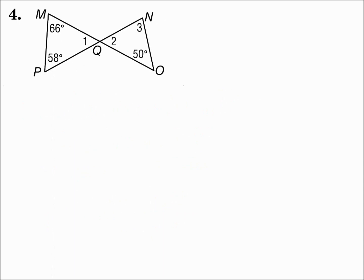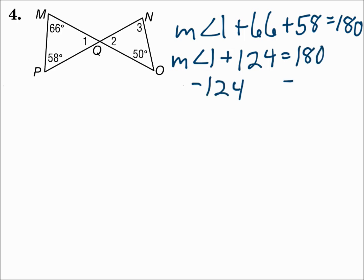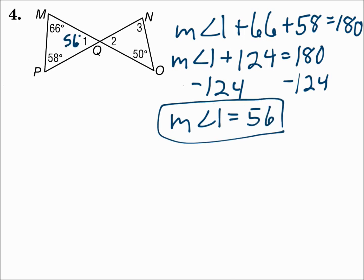Number four. Let's find the measures of angles one, two, and three. On the left-hand triangle, we know two angle measures. On the right-hand triangle, we only know one. So let's start with the left-hand triangle. Those three angles add up to 180. 66 plus 58 is 124. Subtract 124 from both sides, and the measure of angle one is 56.